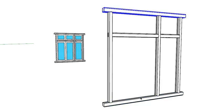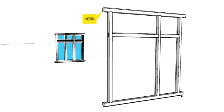The head and sill members both project outward from the face of the frame — roughly about 100 millimeters on all sides. This projection is called the horn. The horn goes inside the wall and helps to hold the window properly in place.